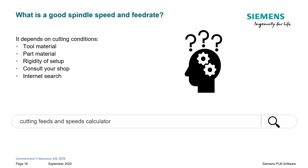I often get asked: what is a good spindle speed and feed rate? The answer is it depends on a lot of things — the tool material, the part material, and how rigid the setup is. Rigidity is very important to subtractive machining: the more rigid the setup, generally speaking, the faster we can machine. If you're working in a machine shop, they likely already have feeds and speeds for most materials they machine. If starting from scratch, I suggest a simple internet search for a cutting feeds and speeds calculator to get at least a starting point for your particular environment.